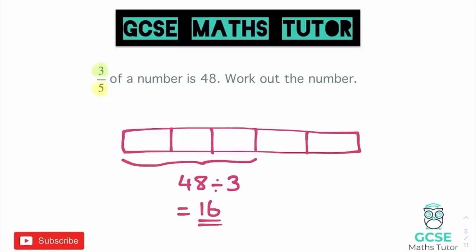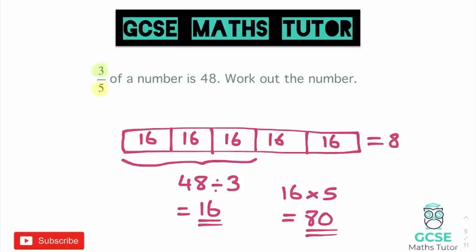If I put 16 into each of these bars, I would also put it into the additional two, because we are looking at all five of them. So that number, if we add up all those 16s — or do 16 multiplied by five, because there are five boxes — that adds up to 80. You can put the 80 next to your diagram if you prefer. That is how we approach these questions. It's the complete opposite of what we did before — this time we're dividing by the numerator and multiplying by the denominator.